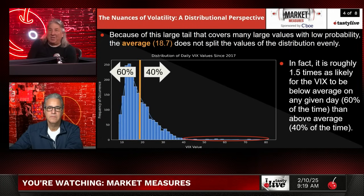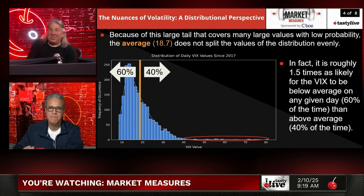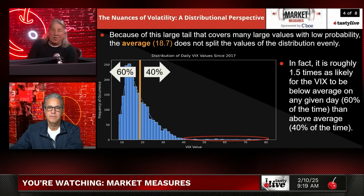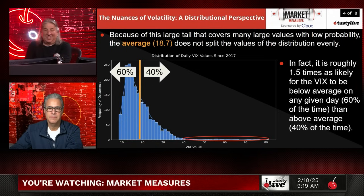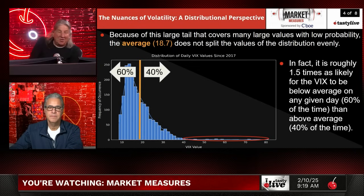The average of 18.7 does not split the values of the distribution evenly. In fact, it is roughly one and a half times as likely for the VIX to be below average on any given day — 60% of the time — than above the average at 40% of the time. That's why you can see that yellow line all the way to the left on this graph, which puts the whole low-state concept into perspective.